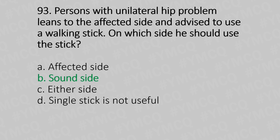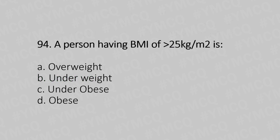Question 94: A person with BMI greater than 25 kg per meter squared is — option A: overweight; option B: underweight; option C: under obese; option D: obese. The answer is option D: obese.